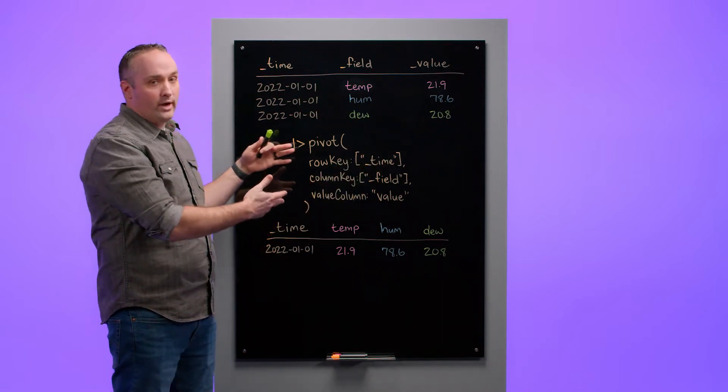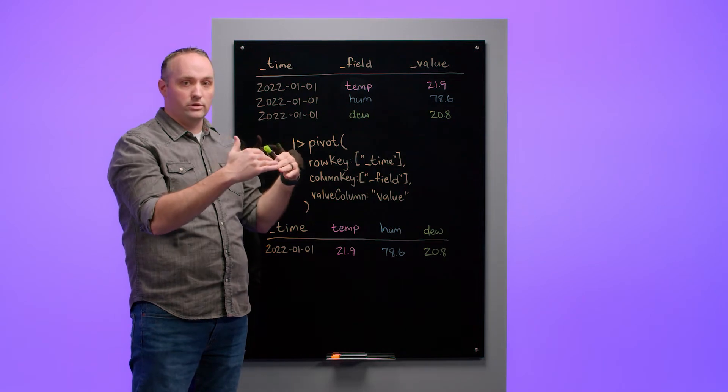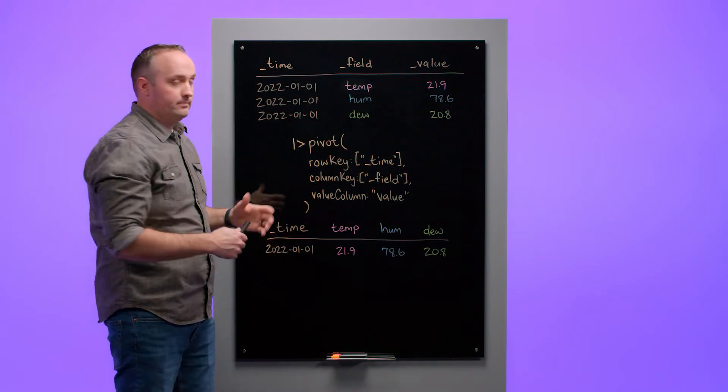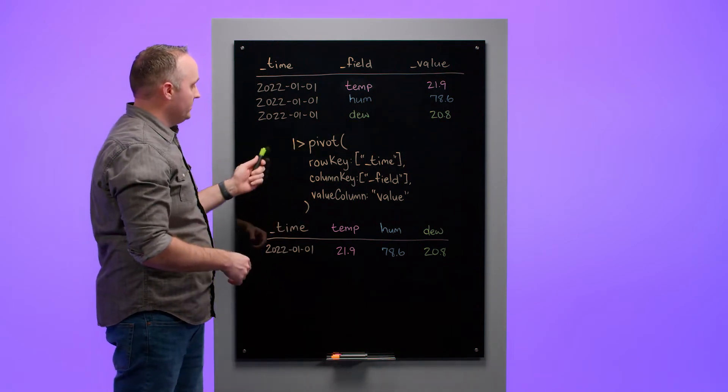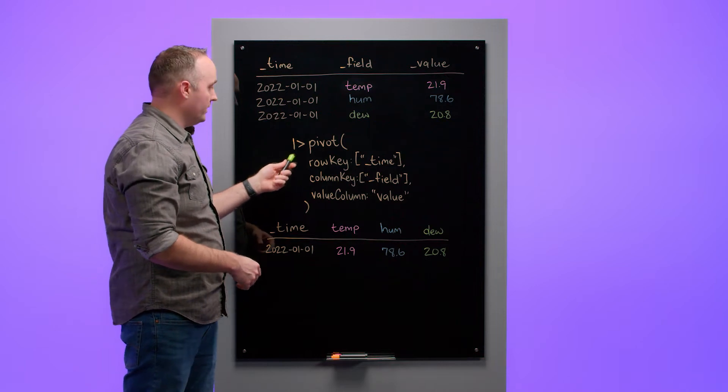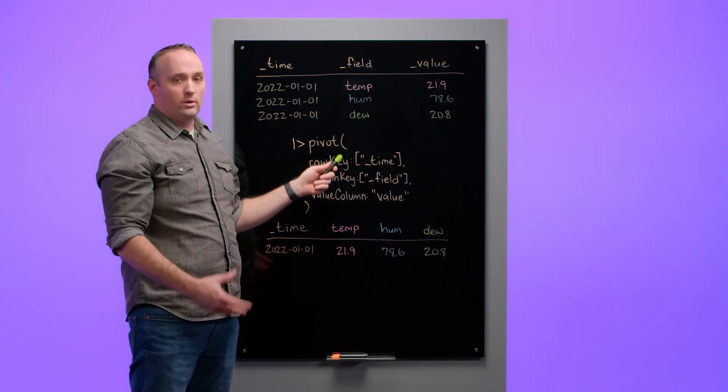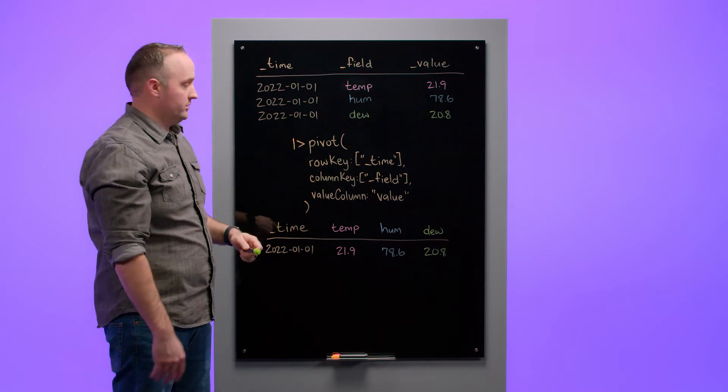In order to operate on these different fields at the same time, I need to pivot them into rows based on time. I take this input data and use the pipe forward operator to forward it into the pivot function. I first specify the row key, which defines what column we're pivoting the data on. For every unique value in the row key column or list of columns, I'll get one output row.